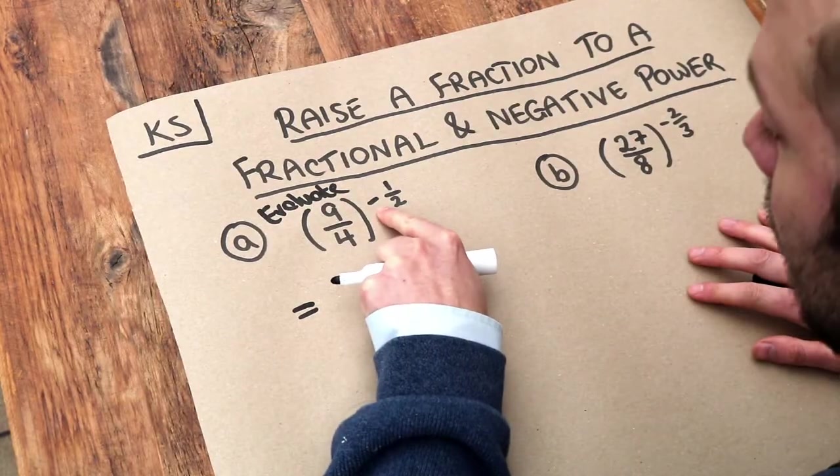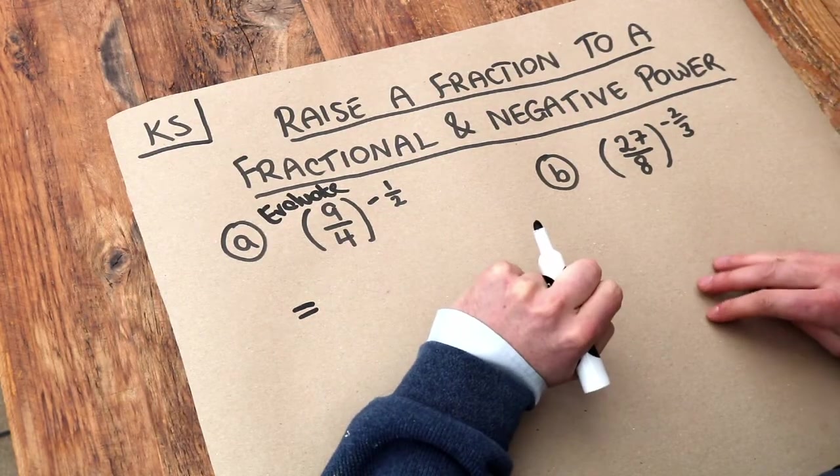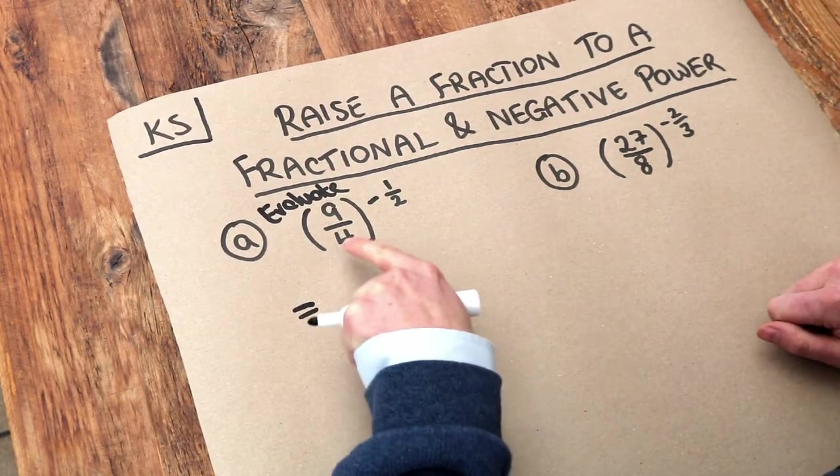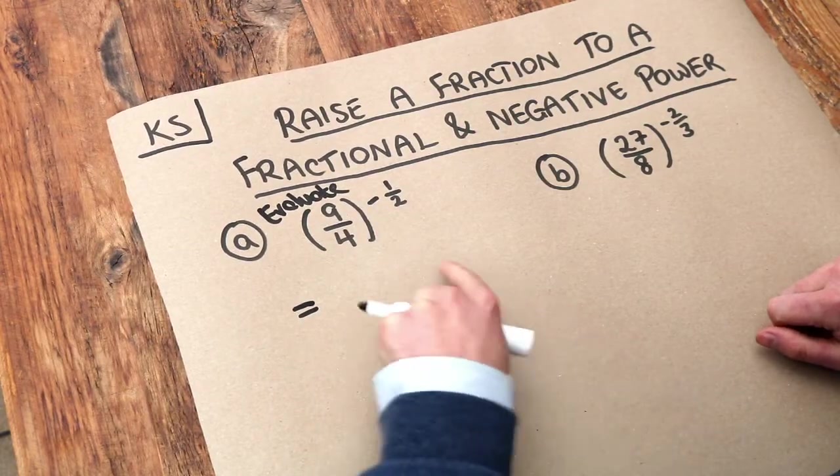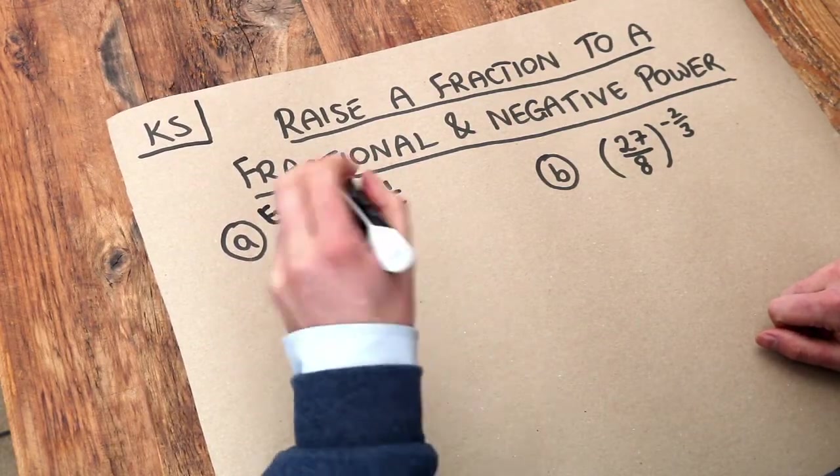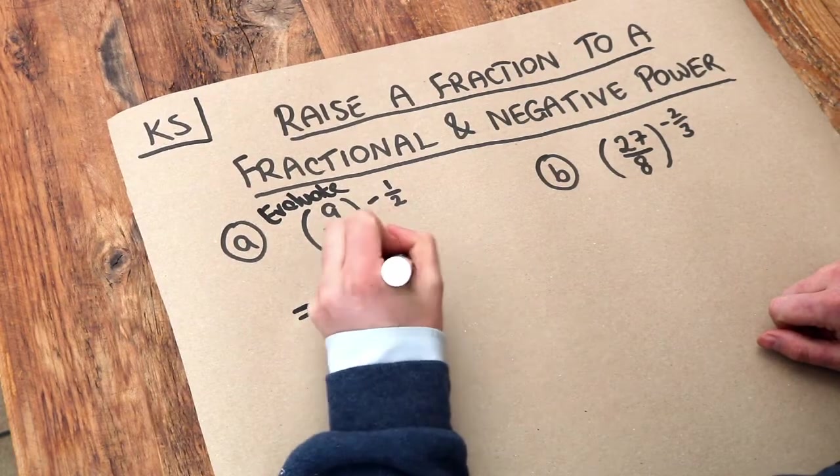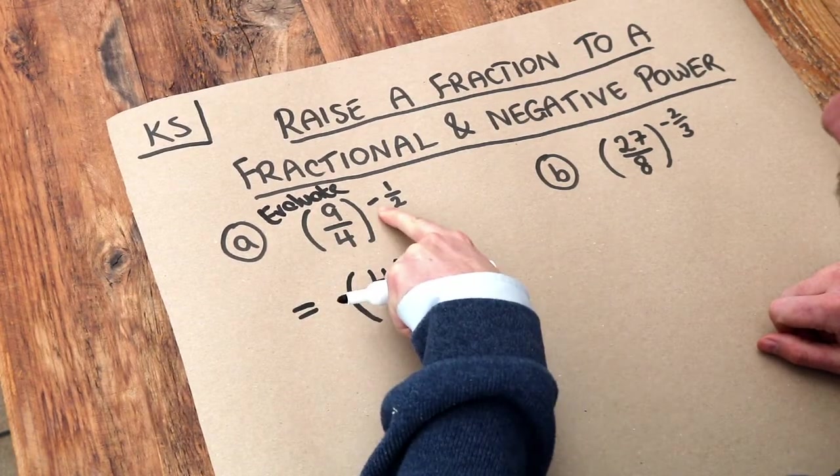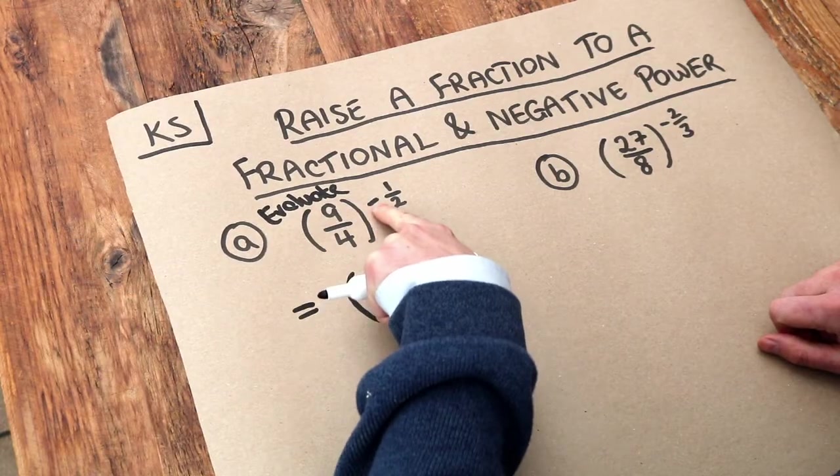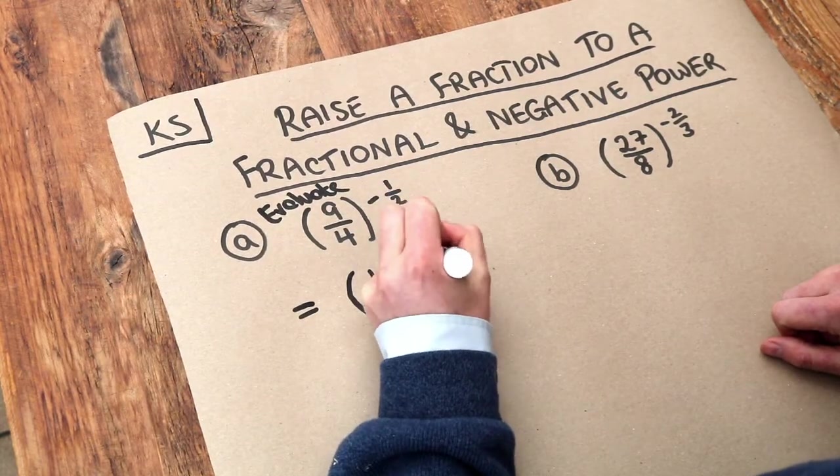So let's deal with the negative part of the power first. Do you remember when you have a negative power you do one over this thing here. And when you do one over a fraction it just flips it upside down. We say it reciprocates it. So we've dealt with the negative part of the power by flipping this upside down and we've got rid of that minus now in the power.